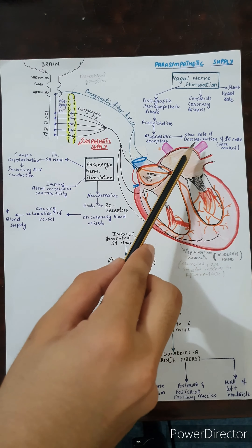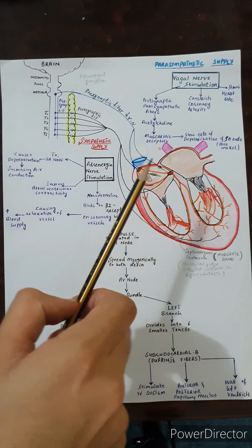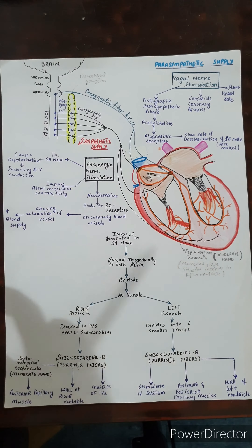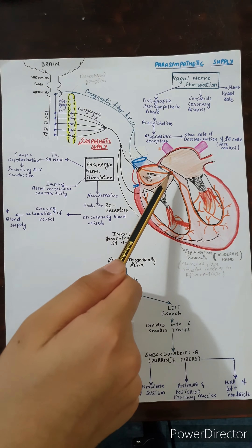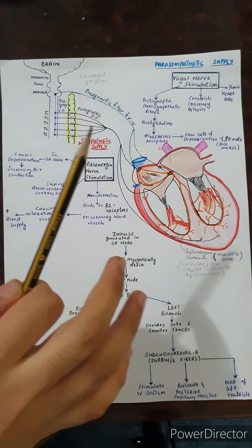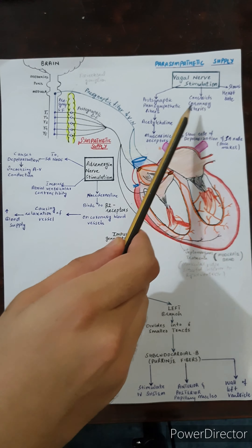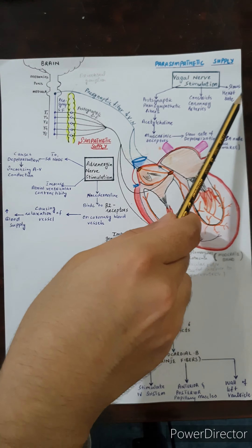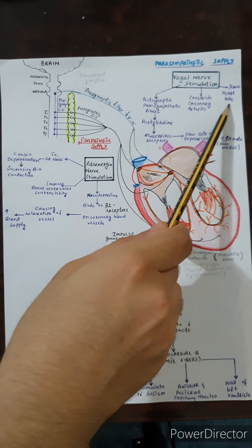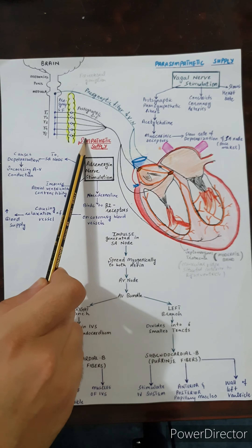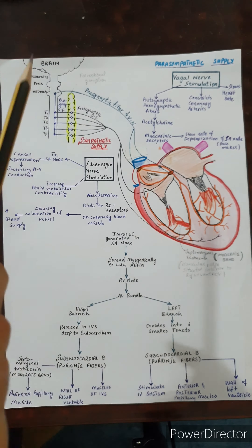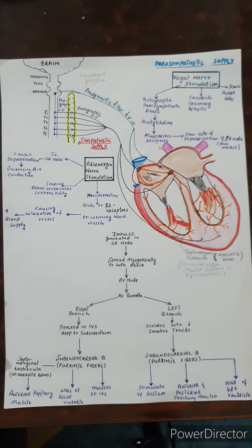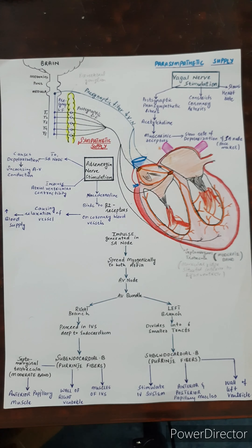These muscarinic receptors are present in the SA node. This binding slows down the rate of depolarization of the SA node, which is also called the pacemaker of the heart. In abnormal cases, the pacemaker may shift to the AV node or the Purkinje fibers. The second function of the parasympathetic supply is to constrict the walls of the coronary arteries, reducing blood supply and ultimately slowing down the heart rate. So, sympathetic supply increases the heart rate and blood supply, while parasympathetic supply reduces the heart rate and blood supply, returning the heartbeat to its normal rate.